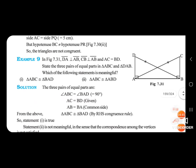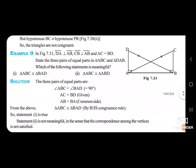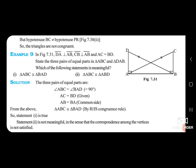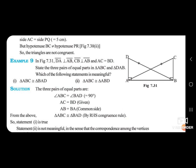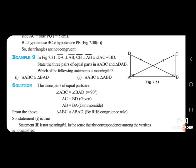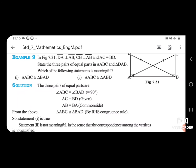Uske baad Example 9 dekho. In figure 7.31: DA perpendicular to AB, CB perpendicular to AB, AC is equal to BD. State the three pairs of equal parts in triangle ABC and triangle DAB.